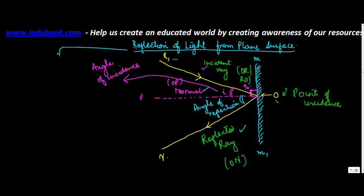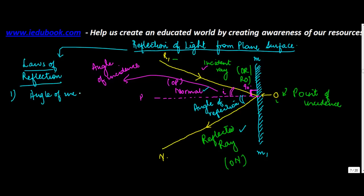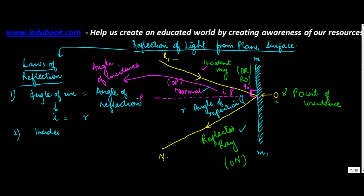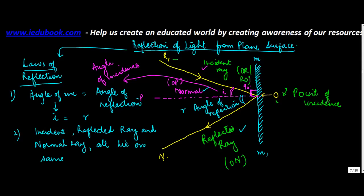Now there are certain laws for reflection of light, known as the laws of reflection. The first law says that the angle of incidence is equal to the angle of reflection, or i equals r. The second law says that the incident ray, the reflected ray, and the normal all lie on the same plane.